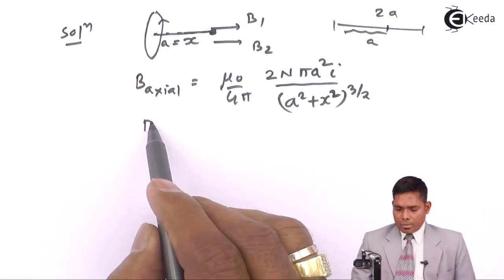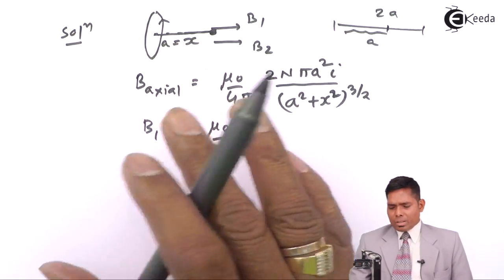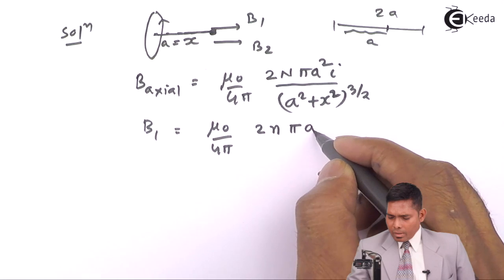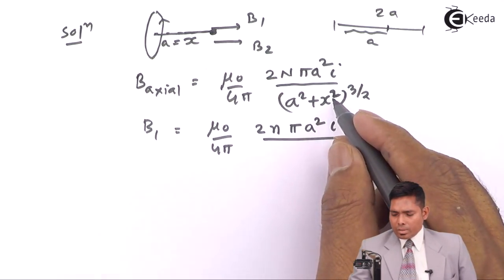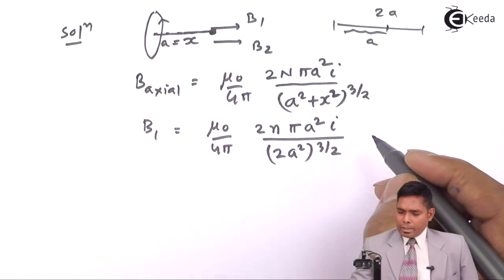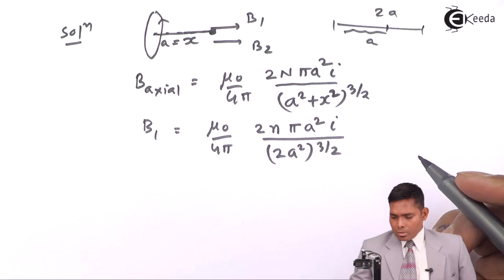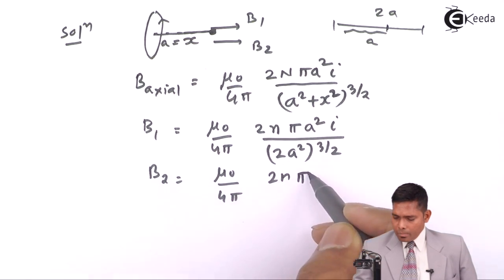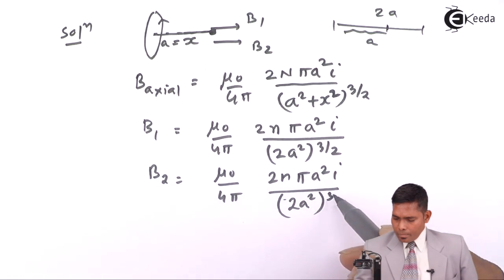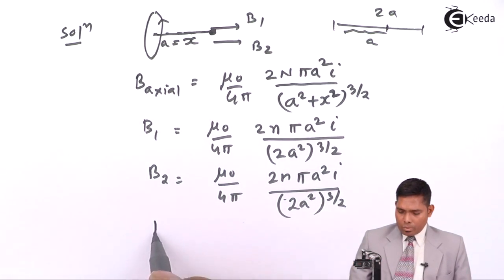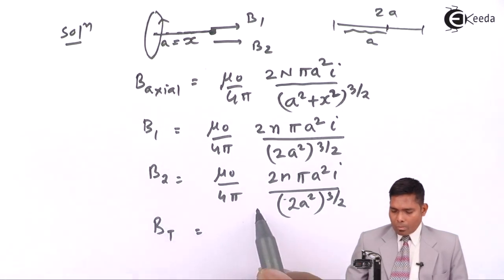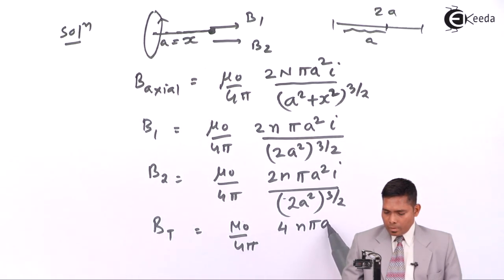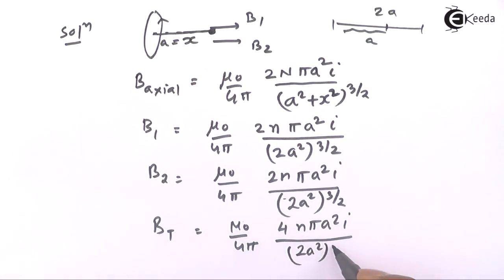For the first coil, the magnetic field is: B1 = (µ₀/4π) × 2nπa²I / (a² + a²)^(3/2). Everything is the same for both coils — radius, turns, current — so B2 equals the same value. The denominator becomes (2a²)^(3/2). The total field B = B1 + B2, which is twice this value: B_total = 2 × (µ₀/4π) × 2nπa²I / (2a²)^(3/2).